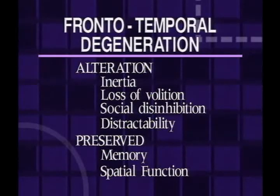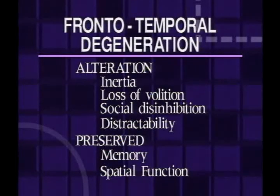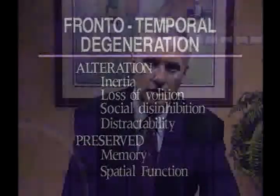On the other hand, since the frontal lobes are specifically damaged but the memory circuits located in the temporal lobe are left intact, you would have preserved memory. You would have preserved spatial function, which is programmed in the parietal lobes. This goes back to the graphic demonstrating that different brain regions do different things. When you get one of these frontal lobe or frontotemporal degenerations, you're going to lose functions predominantly in the frontal lobe.